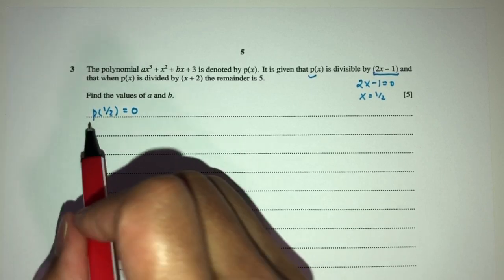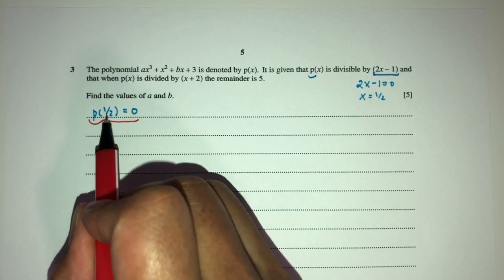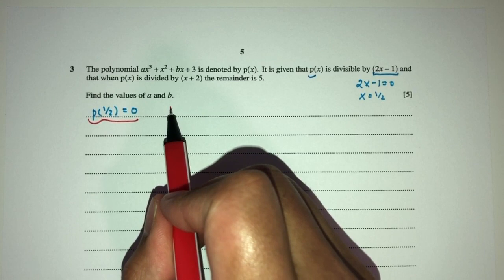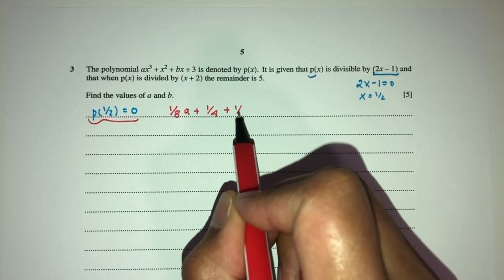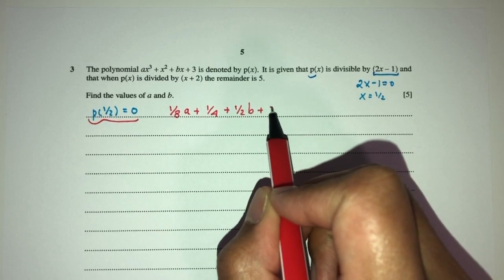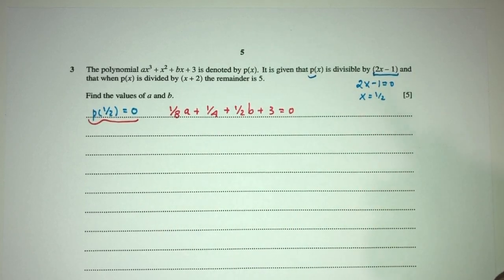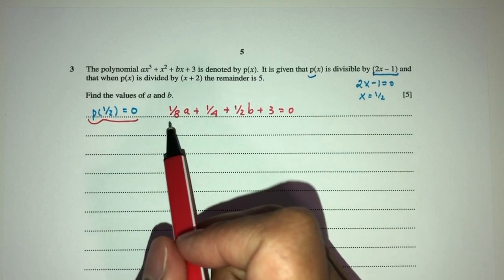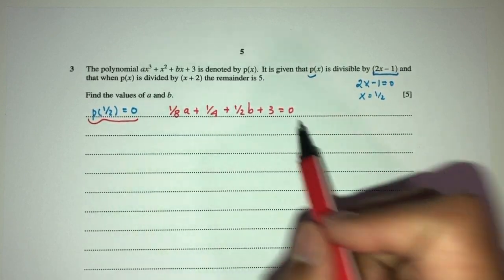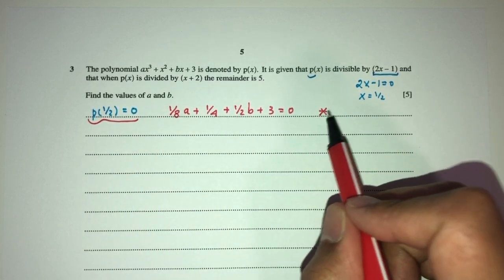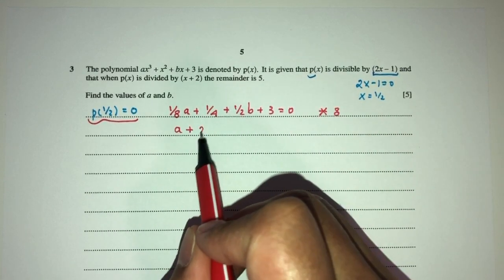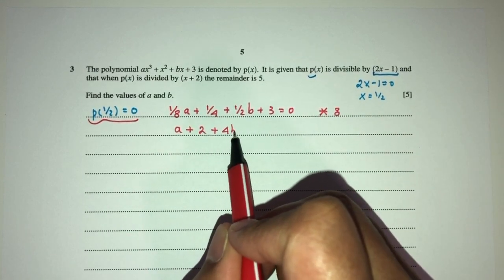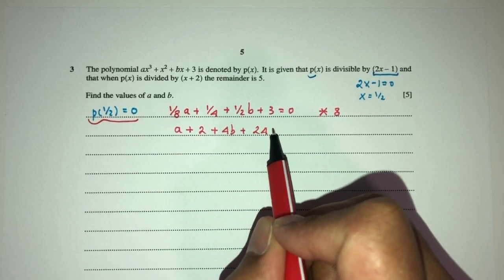Now we can use this to form an equation. Replace half in here, you will have 1 over 8 a, plus 1 over 4, plus half b, plus 3, and the remainder has to be 0. Now I don't like to work fractions, let me just remove these fractions. I can times everyone by 8, you will have a plus 2 plus 4b plus 24, that has to be 0.